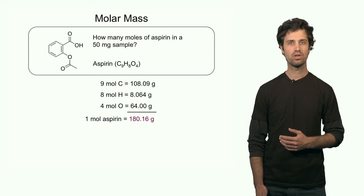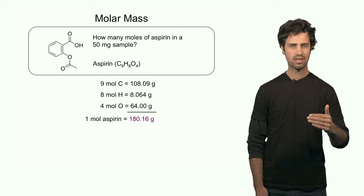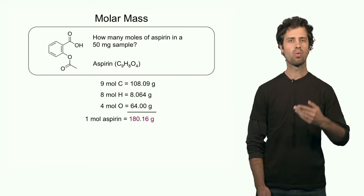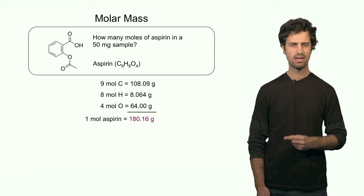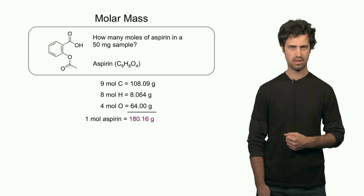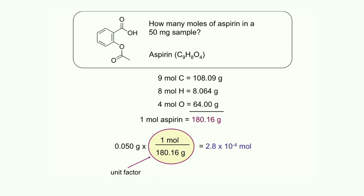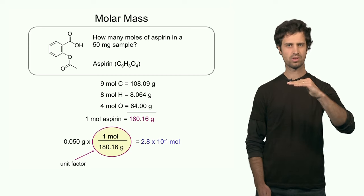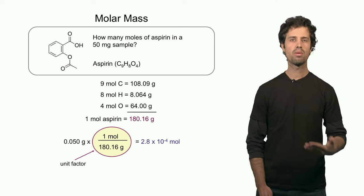Knowing this molar mass, I can do a conversion — I can convert the amount in grams to the amount in moles. I use the relation I just derived: one mole is 180.16 grams. That means I can make a unit factor with moles on top and grams on the bottom, so the unit of grams cancels out. So 0.05 grams, which is 50 milligrams, times this unit factor gives 2.8 times 10 to the minus 4 moles. I converted grams to moles by dividing the mass by the molar mass.